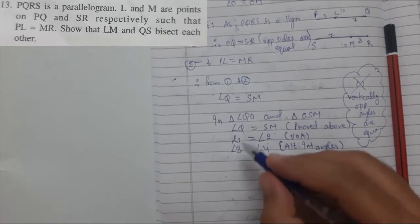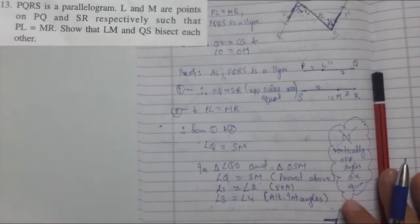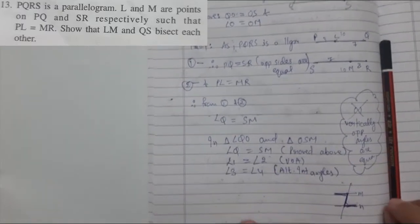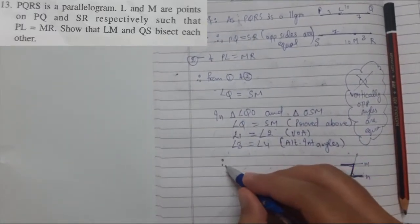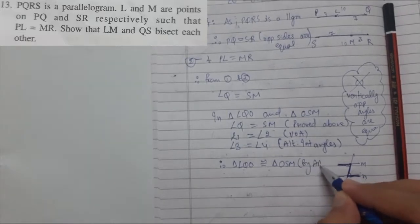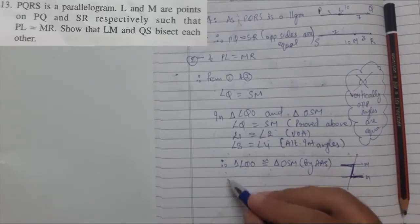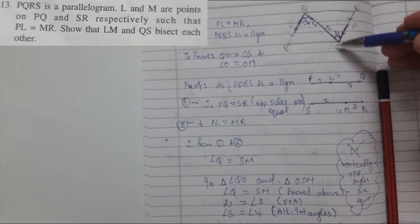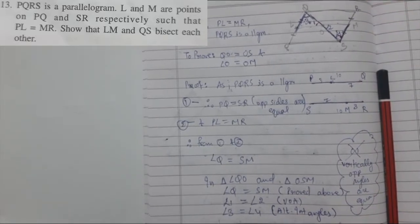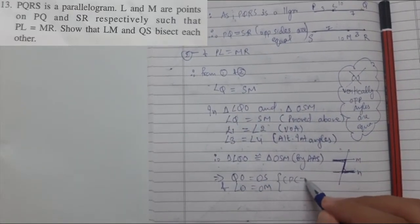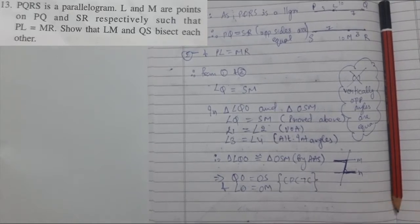We now have angle, angle, side — so by the AAS congruency criterion, triangle LQO is congruent to triangle OSM. Therefore, the remaining parts QO equals OS and LO equals OM are also equal by CPCTC (Corresponding Parts of Congruent Triangles are Equal). That's it for today, see you in the next video.